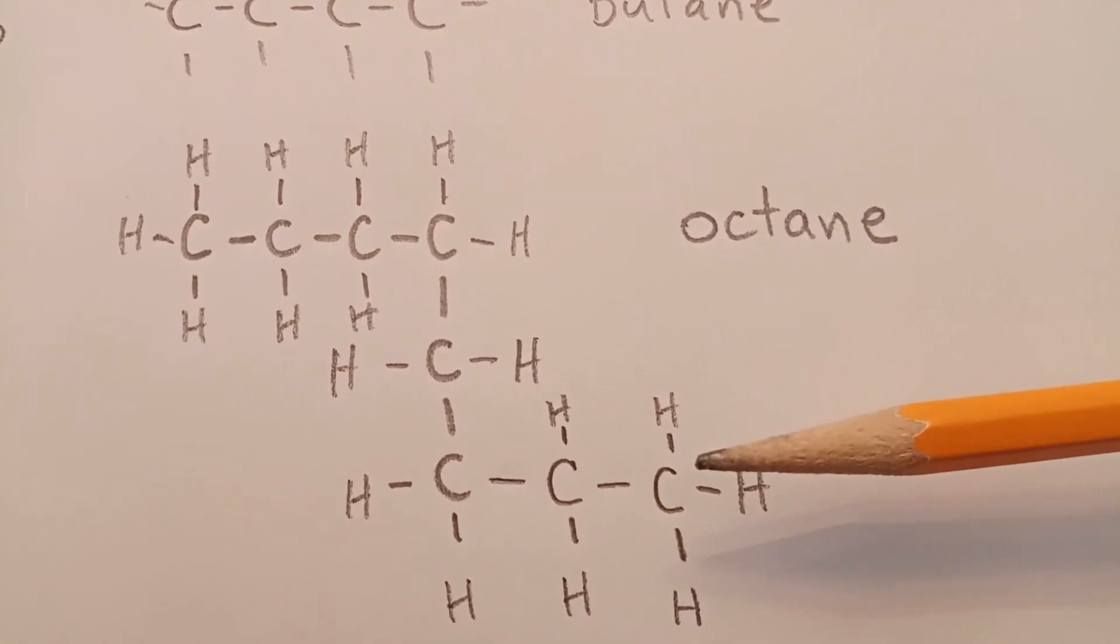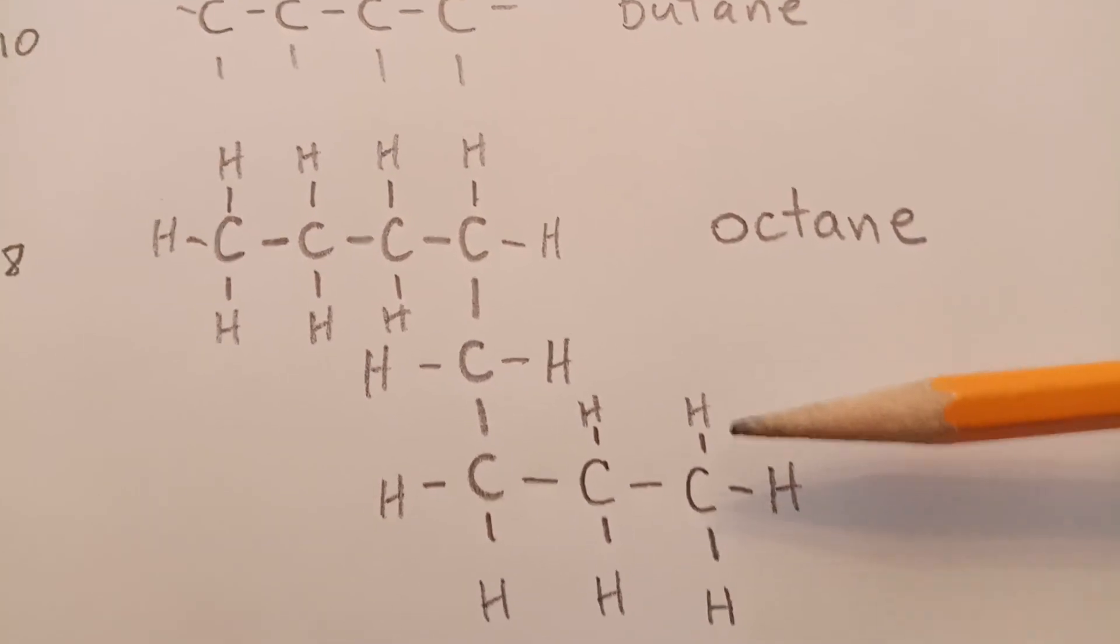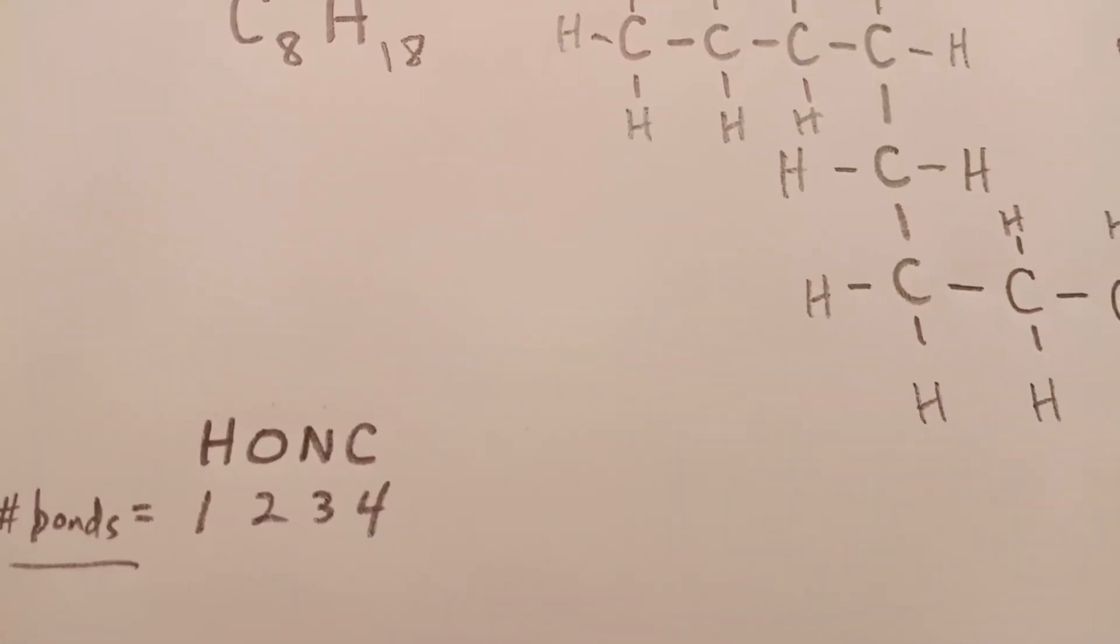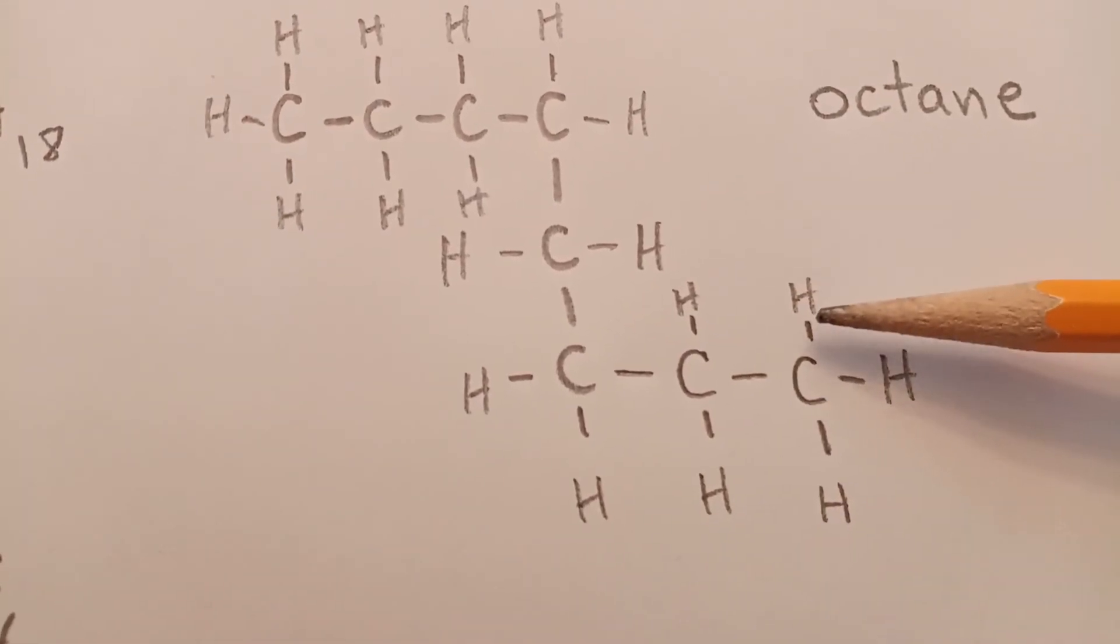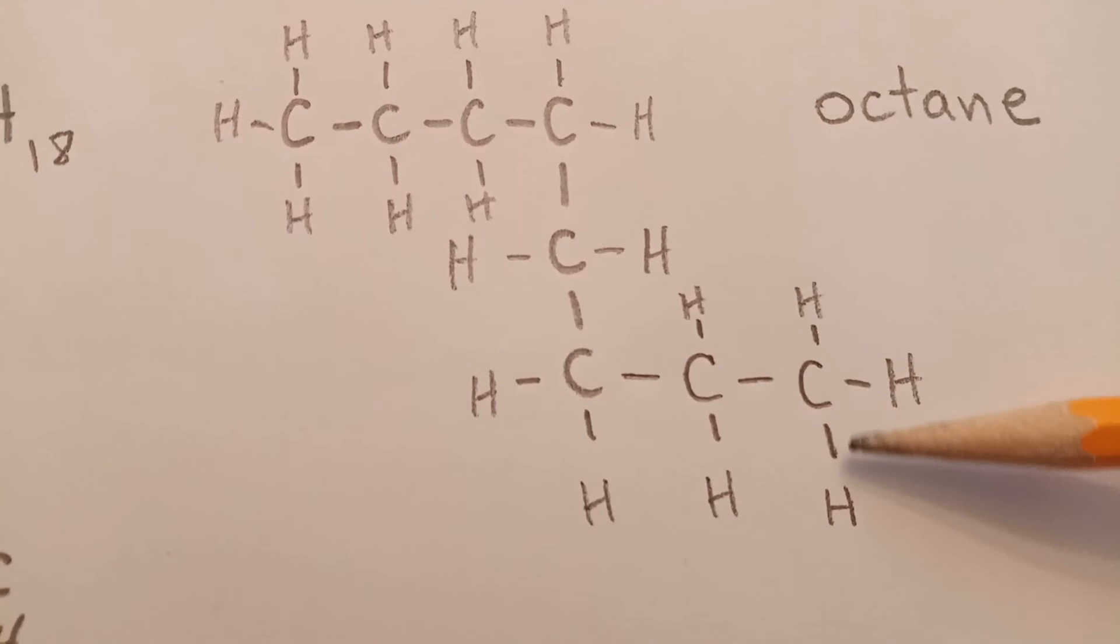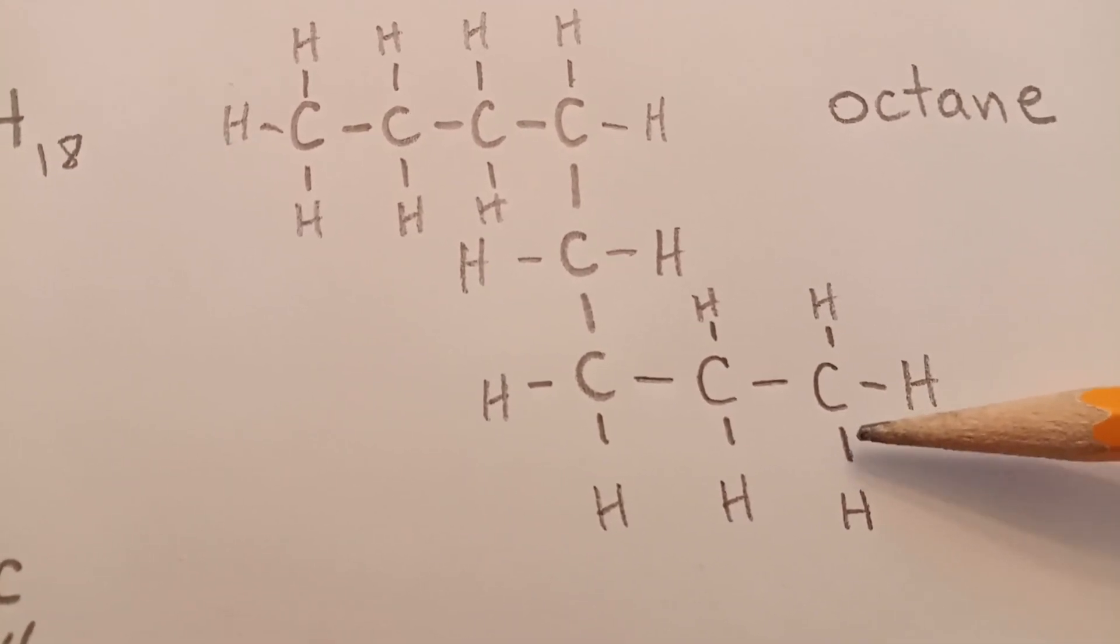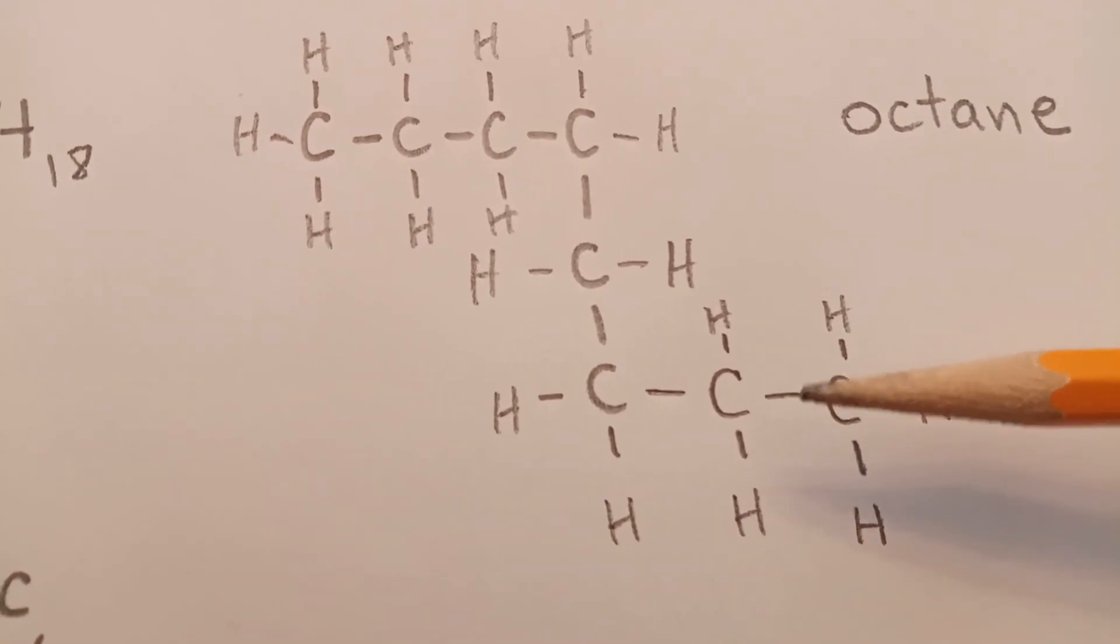You can get very large compounds. But the main thing about drawing structural formulas is comply with HONC, H-O-N-C, one, two, three, four bonds. And you should also be aware that each bond, each dash represented here, represents a pair of electrons. That's a covalent bond with a pair of electrons represented by each dash. Two electrons for a covalent bond.